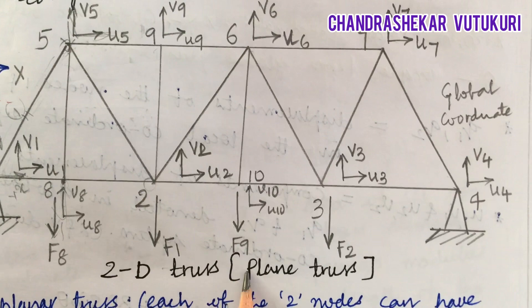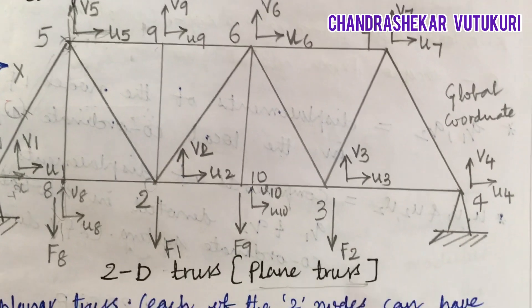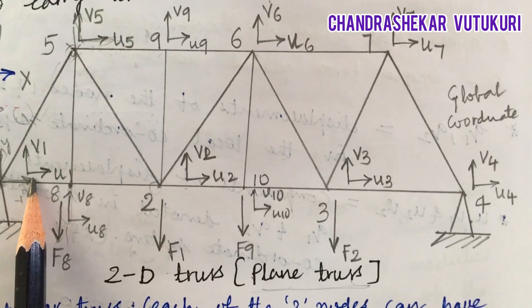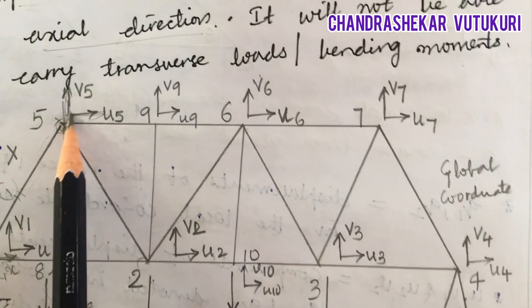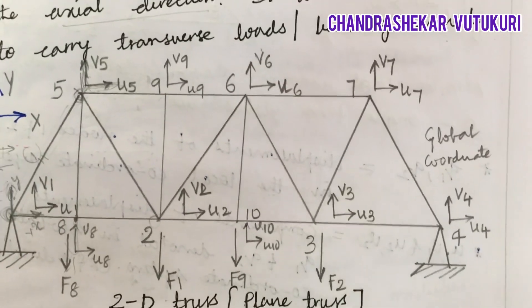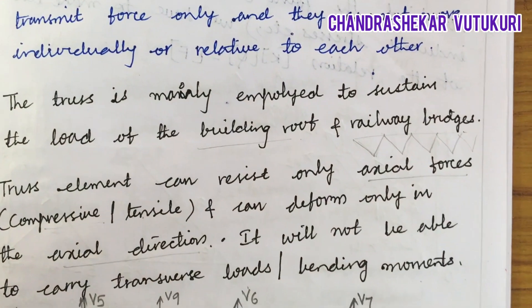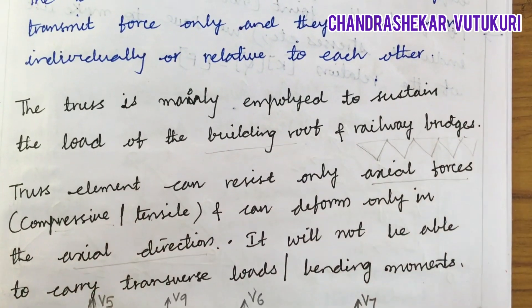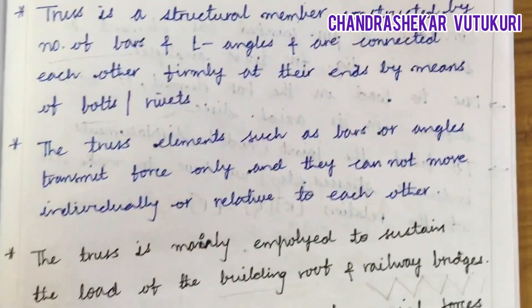This is all about the 2D truss, otherwise called a plane truss or planar truss, where each of the nodes has 2 components of displacement — along the x-axis and along the y-axis. Here, node 5 is also part of a planar truss, along the x-axis and the y-axis. This covers the definition, the load carrying, the x and y axis stresses — compressive and tensile — no bending moment, and the joints fixed with bolts and rivets. This is the definition of a truss.